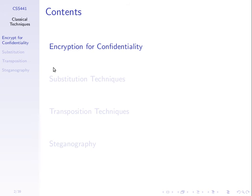We commonly use encryption to provide the service of confidentiality. There are two ways, or two locations, we want to keep data confidential. First, we want to keep data confidential at rest — on a computer. If I save a file, even if others can access that computer, I don't want them to access the contents, so I encrypt the file. Second, we want to keep data confidential in transit as we send it across a network, so I encrypt it before I send it.